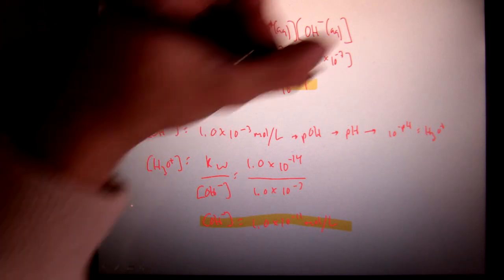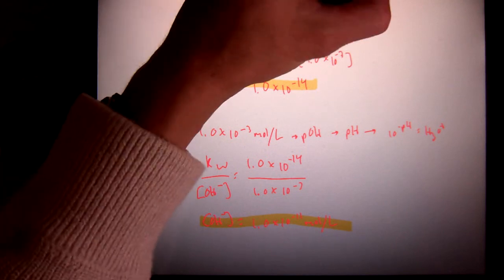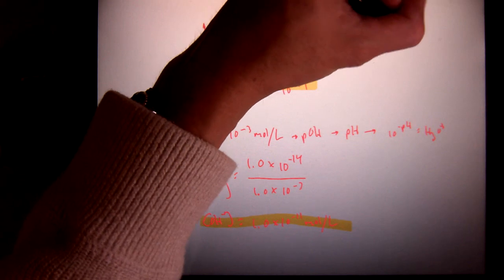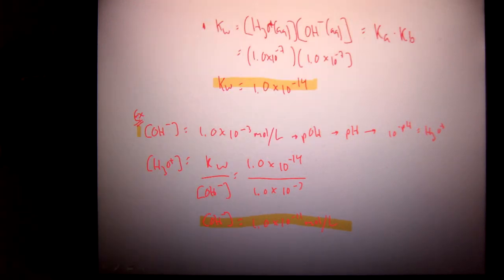Another reason Kw is handy is because it also equals the Ka times the Kb. As you know, the Ka's are from your acid-base table in your data book list. Well, you don't have Kb's. So if I want to find a Kb for a particular base, I need to utilize the Ka in the same fashion. And we'll see examples of that later on.